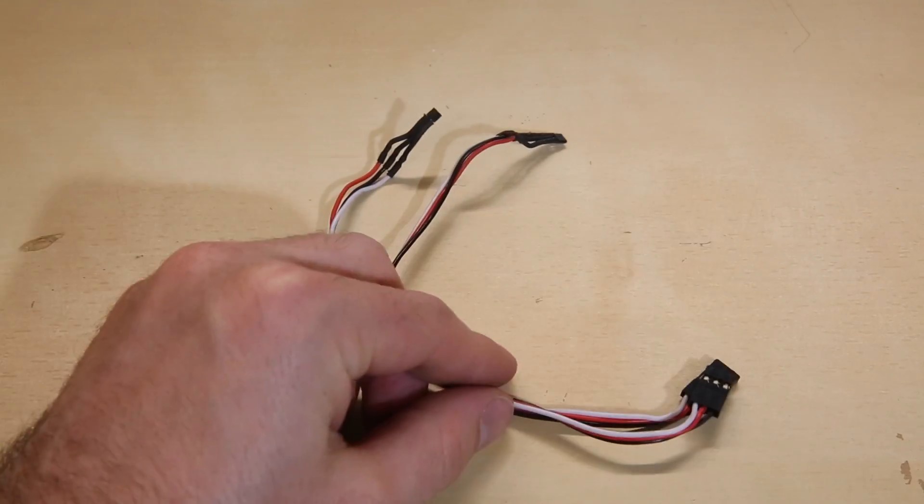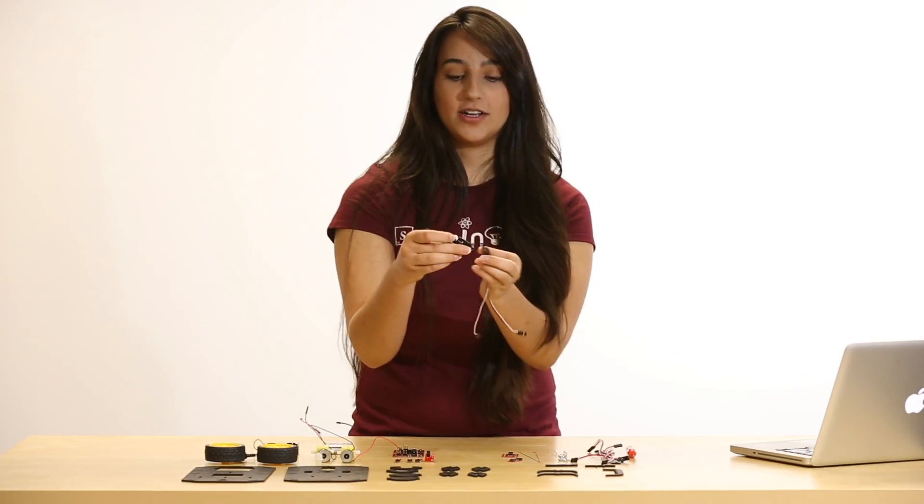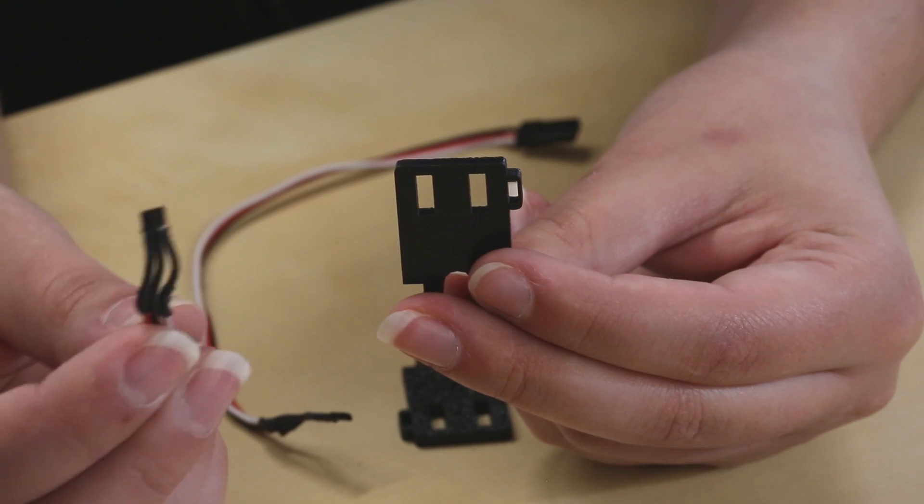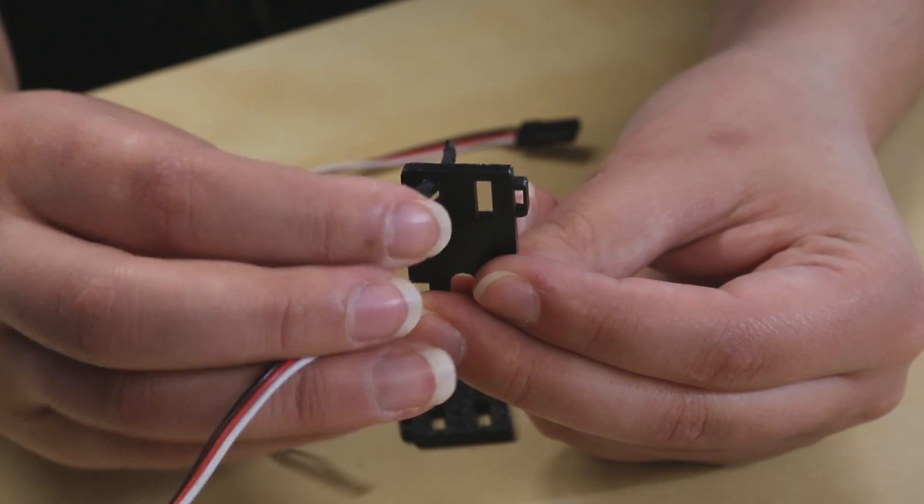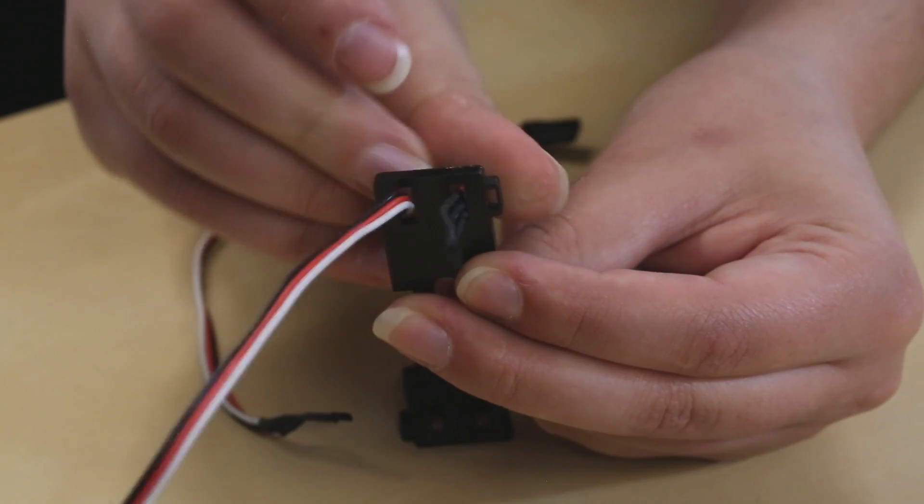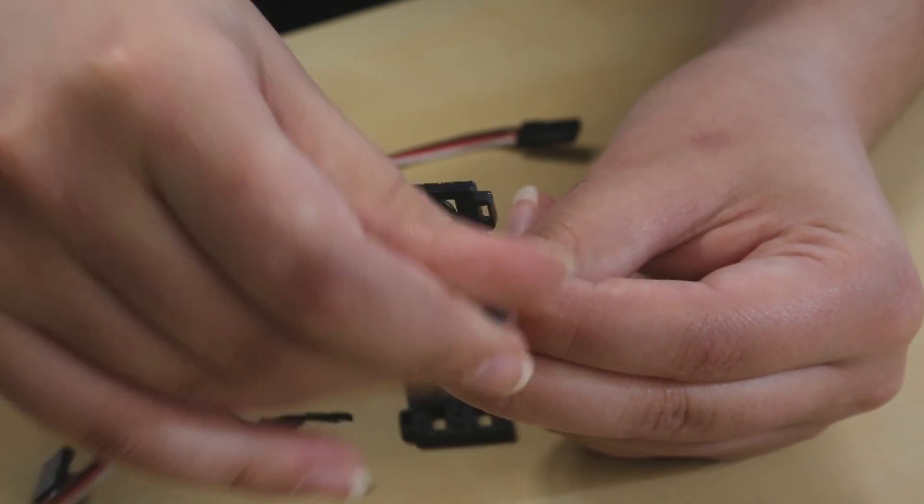Next, we're going to take the Halifex sensors and we're going to put them through our encoder mounts. What you're going to want to do is take the Halifex sensor, sensor side up, and you're going to loop it through from shiny side to the darker side to the dark side.